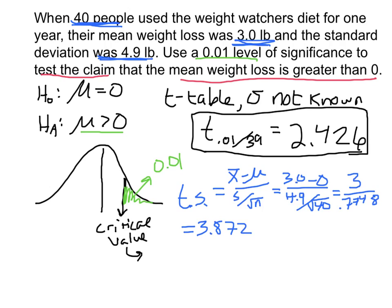Our test statistic is 3.872. That tells us we are lying outside of the mean by 3.872 standard deviations. Our critical value was 2.426, and our test statistic of 3.872 is beyond that — it falls in the rejection region.